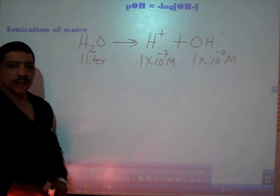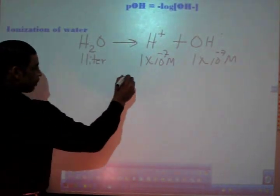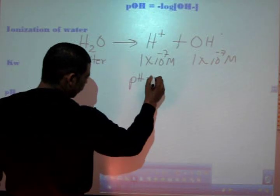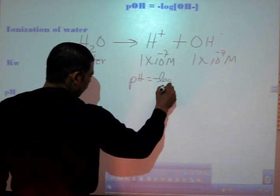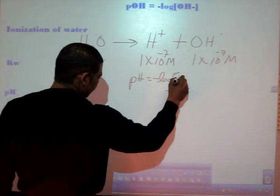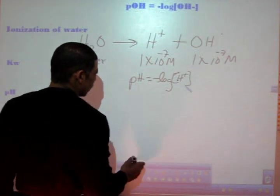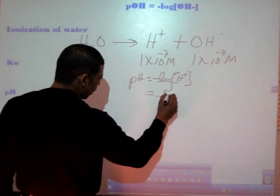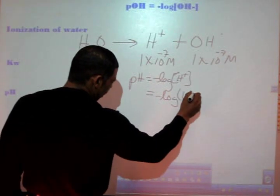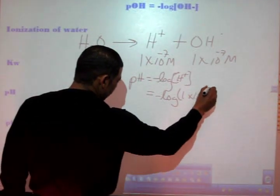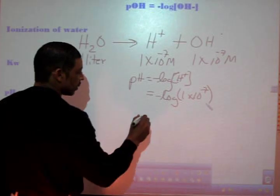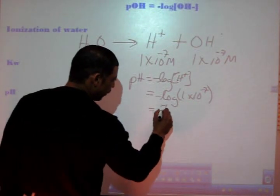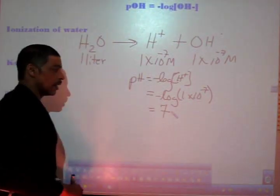From our previous video we know that pH is equal to the negative log of the concentration of hydrogen ion. In other words, in this case the pH is equal to the negative log of 1×10⁻⁷, so therefore pH is equal to a value of 7.